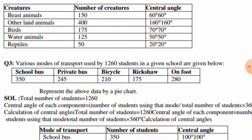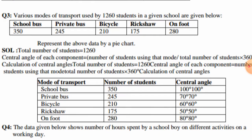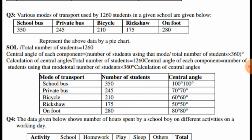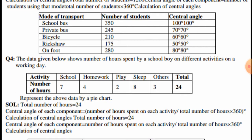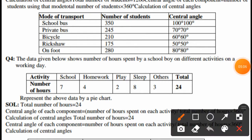In question number 3, various modes of transport used by 1,260 students in a school are given: school bus 350, private bus 245, bicycle 210, rickshaw 175, on foot 280. Total students are 1,260. The central angles are: school bus 100°, private bus 70°, bicycle 60°.